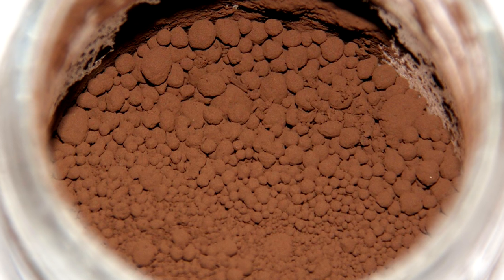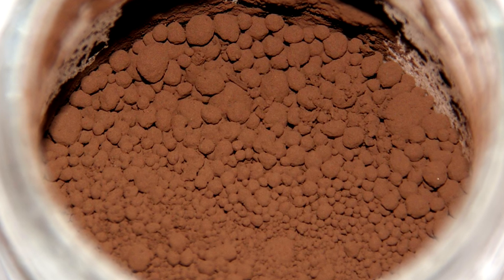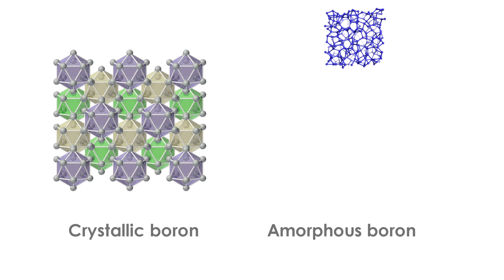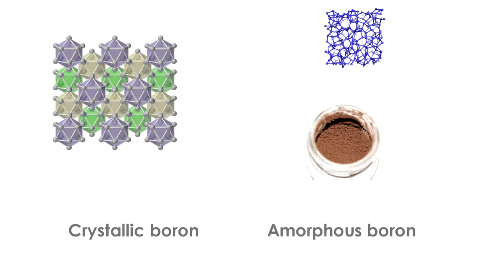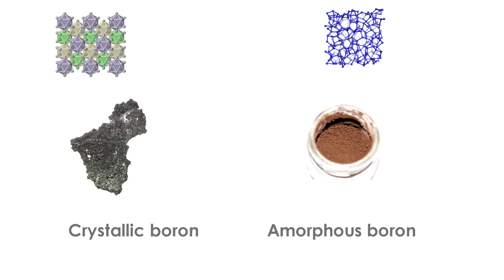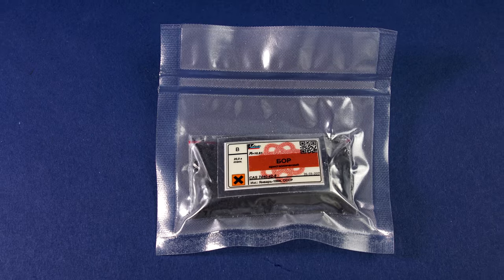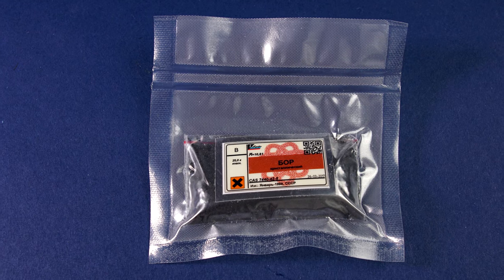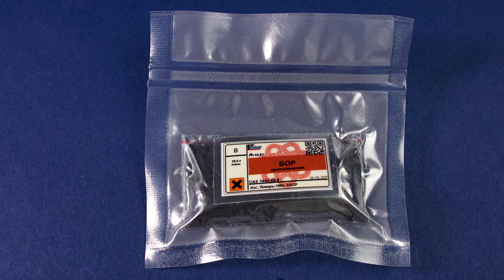Such different forms of the same element are called allotropes. There have been more than 10 allotropes of boron identified. From a chemical point of view, boron is poorly studied because it is very difficult to obtain in its pure form.